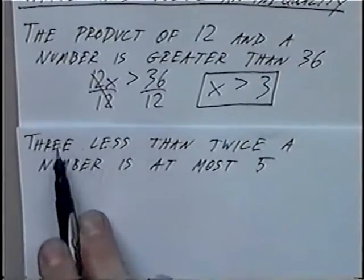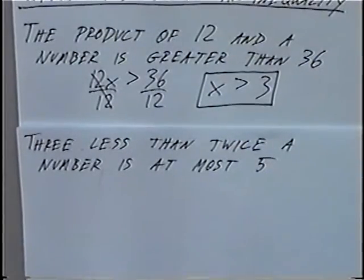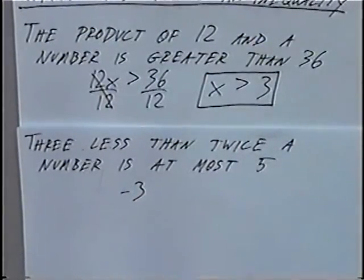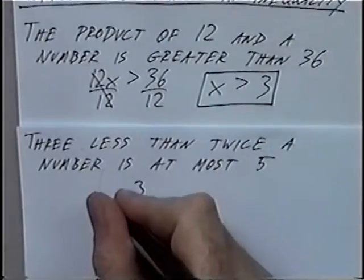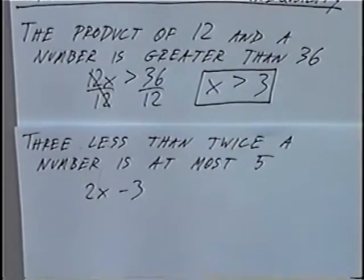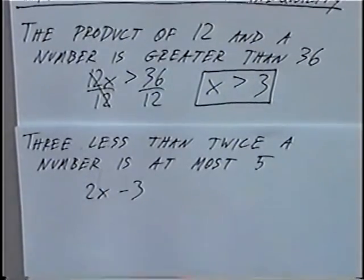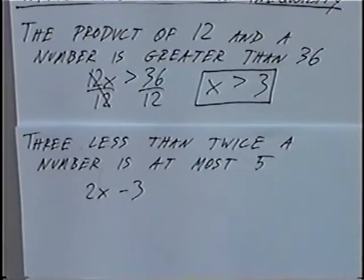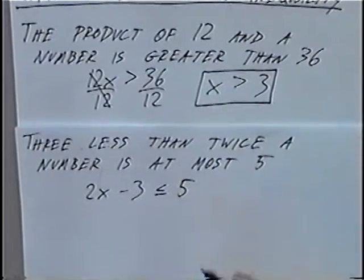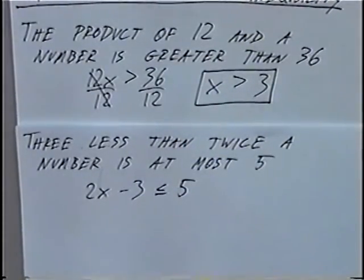To write the inequality: '3 less than' means we subtract 3, which comes at the end of the expression. We are taking 3 away from twice a number, so twice a number is 2x, giving 2x minus 3. 'Is at most 5' means it must be 5 or less — less than or equal to 5. So the inequality is 2x minus 3 is less than or equal to 5.